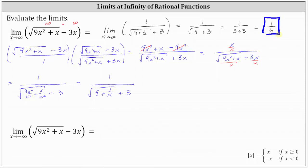Now let's take a look at the second limit. The only difference is X is approaching negative infinity. If we focus on just the square root, we can ignore the plus X because the nine X squared overpowers the X as X approaches negative infinity. For nine X squared, we square the negative value, which becomes positive and then multiply by nine, which indicates the square root approaches positive infinity. And then we have minus three X — three X approaches negative infinity as X approaches negative infinity. So the limit is in the form of infinity minus negative infinity, which simplifies to infinity plus infinity. Therefore the limit approaches positive infinity, and no extra algebra is required.